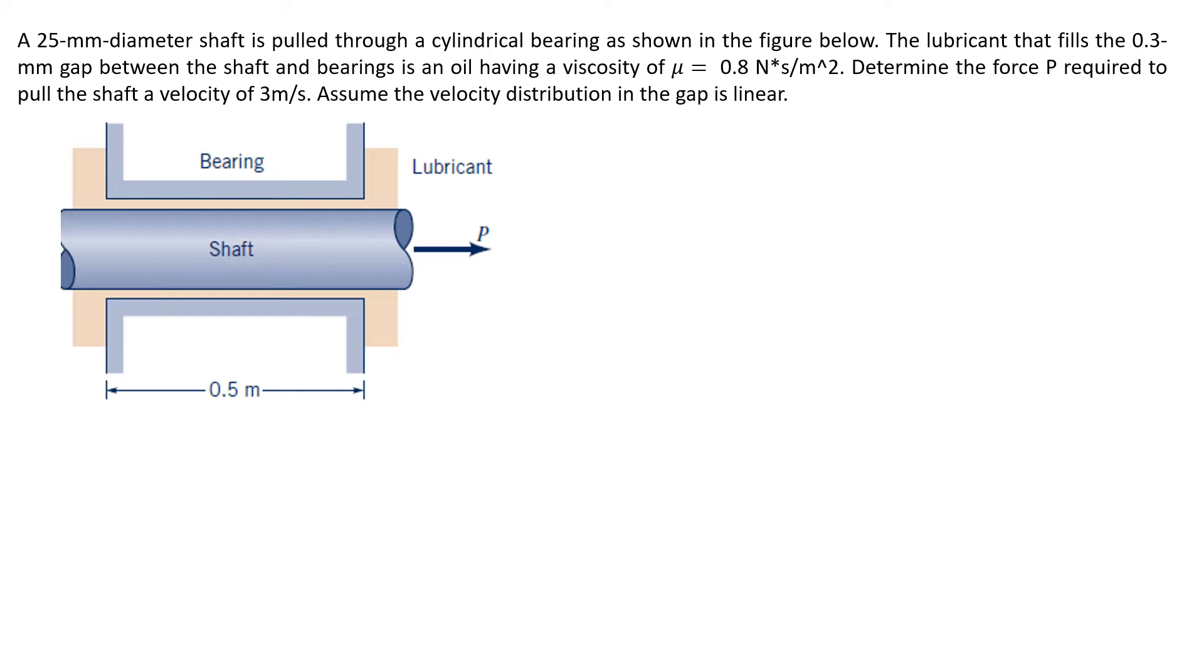The question is to determine the force required to pull the shaft out at a constant speed of 3 meters per second. The pulling force is determined by friction due to lubrication and shaft contact.